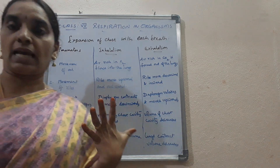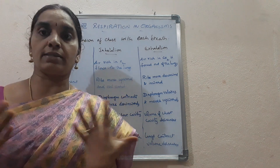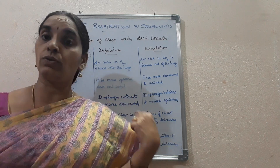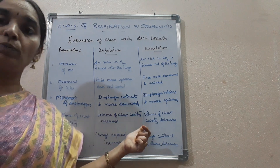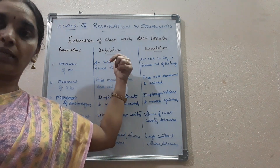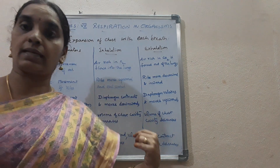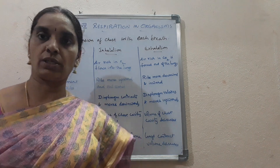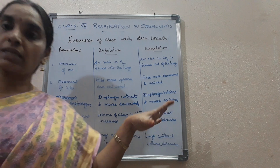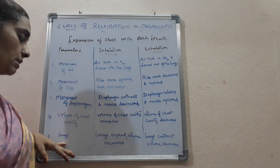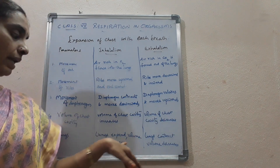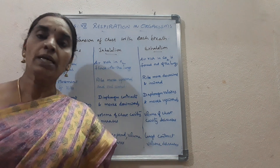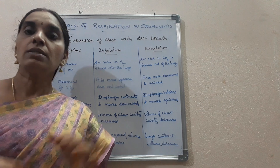The fourth parameter is the volume of the chest cavity. During inhalation, the volume of the chest cavity increases. During exhalation, the volume decreases back to normal. Similarly, during inhalation the lungs expand and volume increases, and during exhalation the lungs contract and volume decreases.